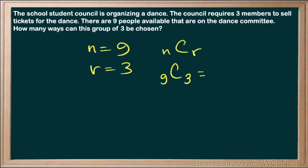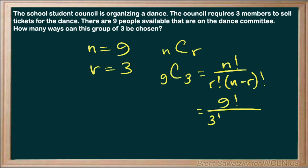By doing this, we can pull out our combinations formula: n factorial over r factorial times n minus r factorial. Plugging in the values: nine factorial over three factorial times nine minus three factorial. This extra term reduces it down so we have fewer possibilities. Calculating it out, it comes out to 84 different ways that we could have chosen that student council.